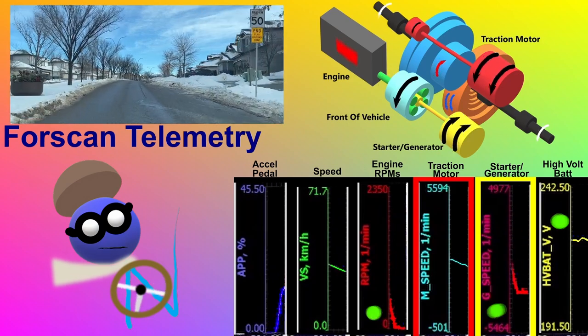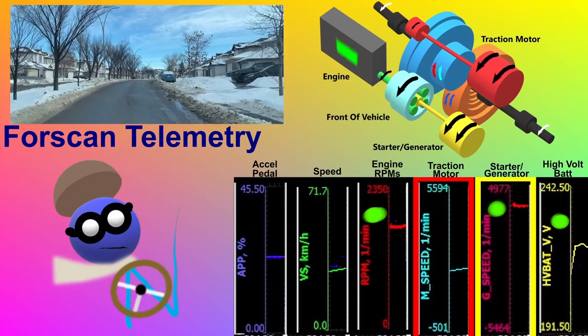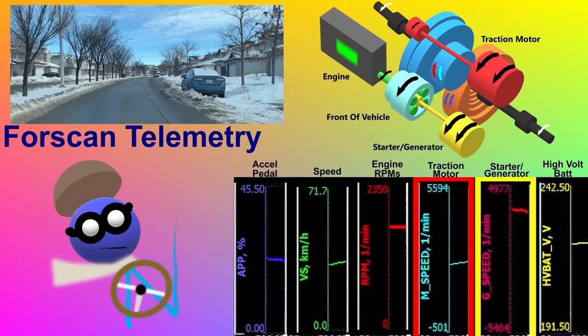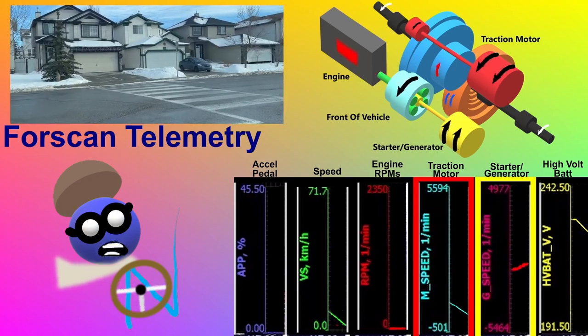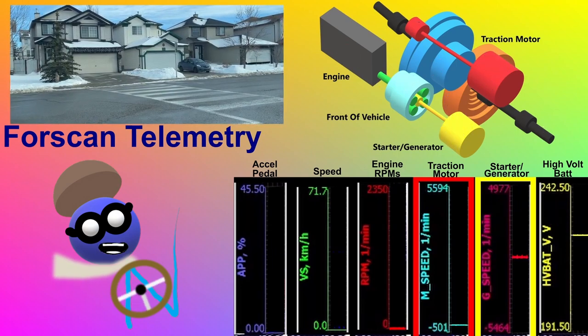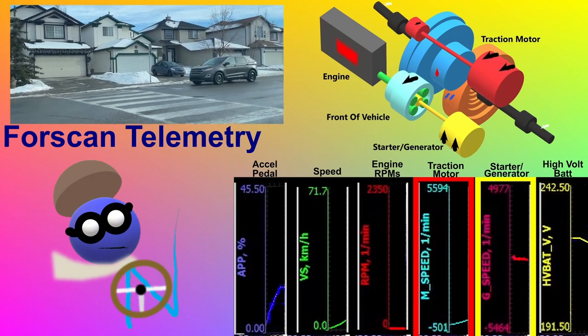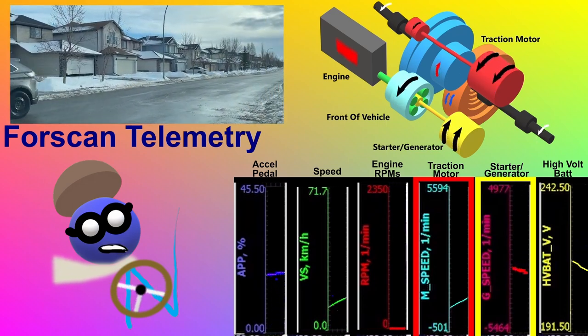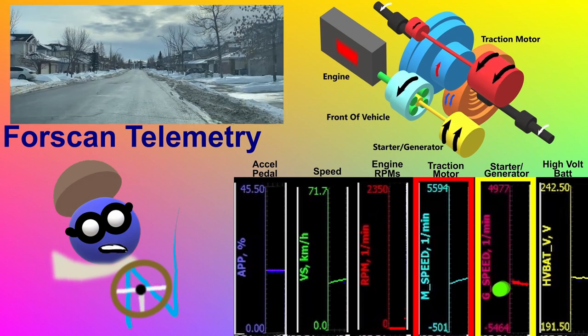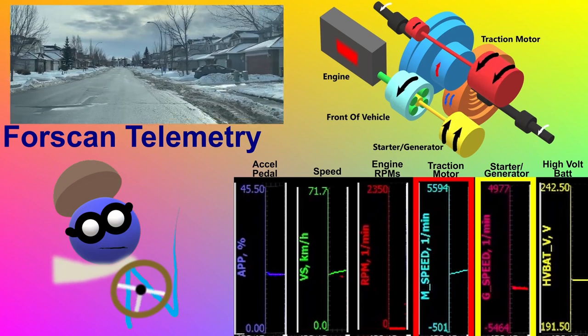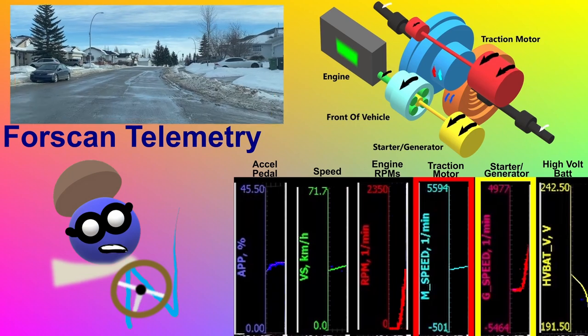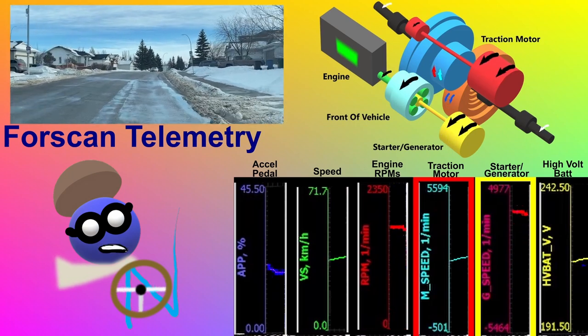Engine off, then on. It's all seamless. Finally, here I am at a stop. The starter generator is zero rpms. Now I accelerate in battery-only mode. Notice the starter generator negative rpms. Here's a short acceleration to a steady speed with the engine on.